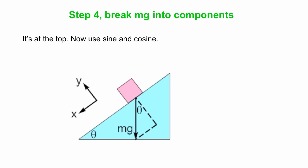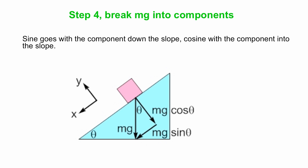So now we use sine and cosine to get the y component is mg cosine theta, it's adjacent to the angle. The side directly across from the angle, the opposite side goes with mg sine theta.